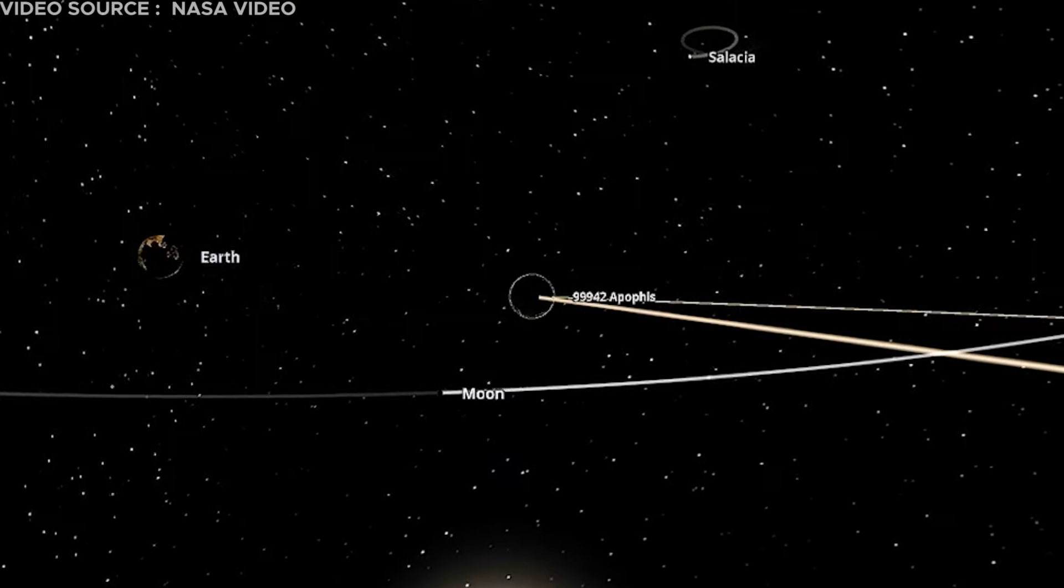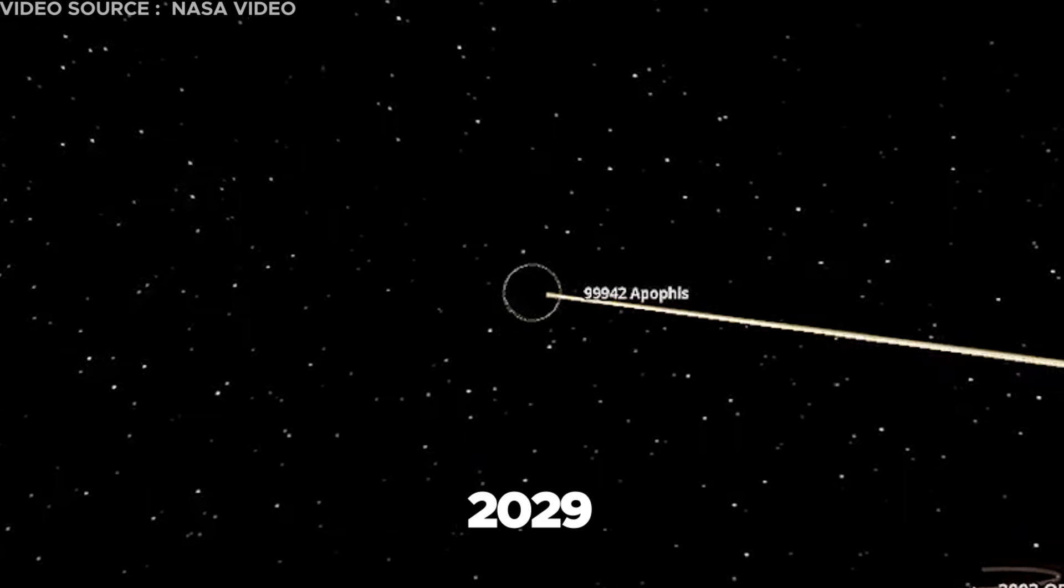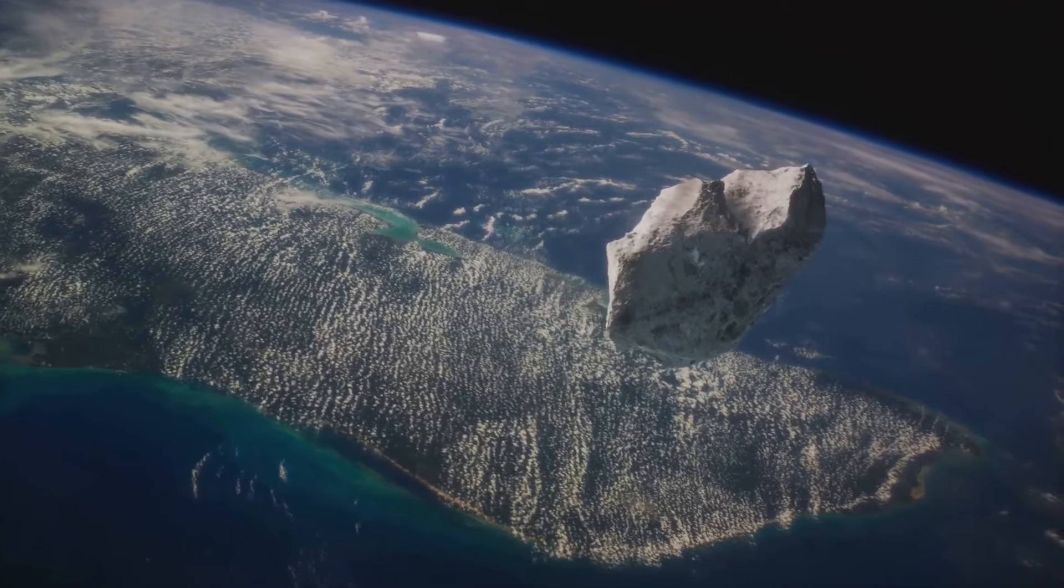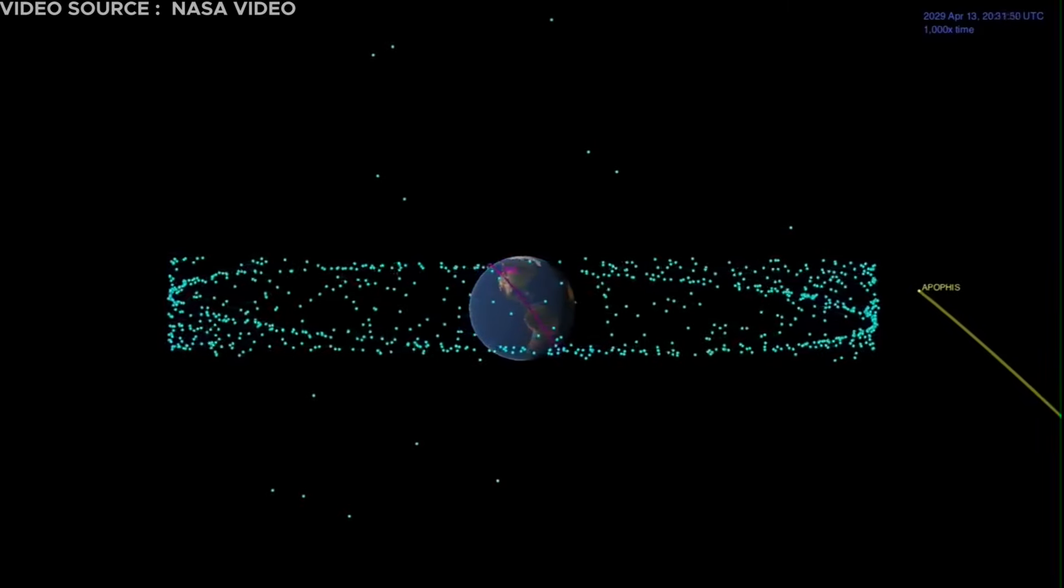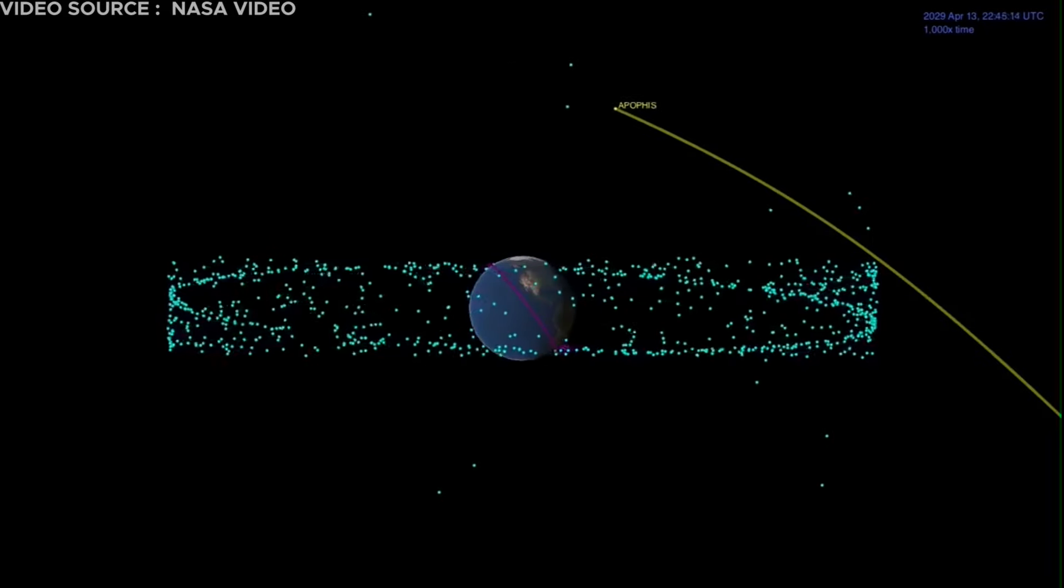Apophis, another near-Earth object, is said to come uncomfortably close in 2029, with an estimated width of approximately 1,100 feet. It is anticipated to pass within less than 20,000 miles from our planet's surface, making it visible to the naked eye.